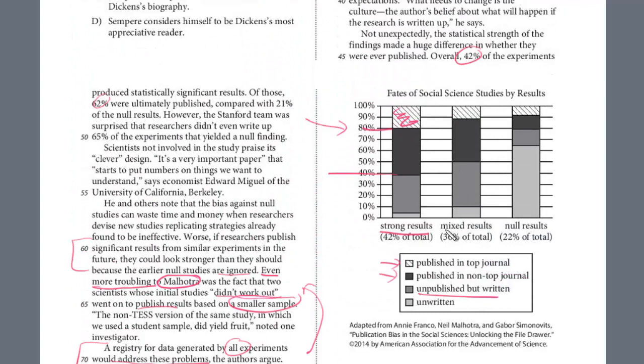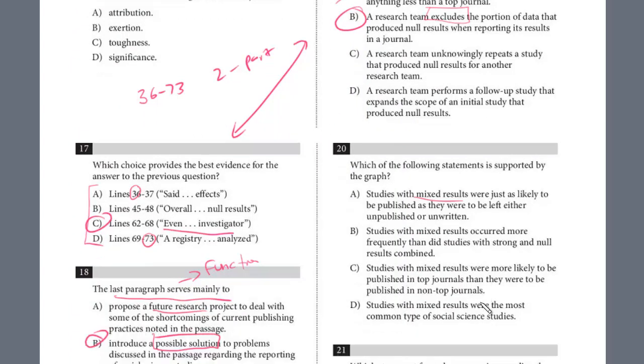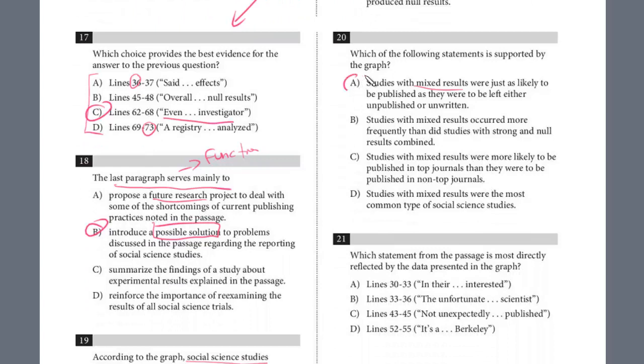Mixed results is the middle bar. Published of the top two. That's exactly 50% just as likely to be unpublished or unwritten. This looks good. It's exactly 50% between published and unpublished. And so the answer for that one is A, number 20.